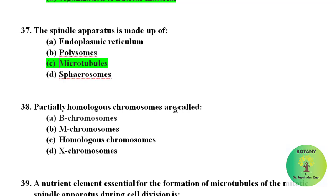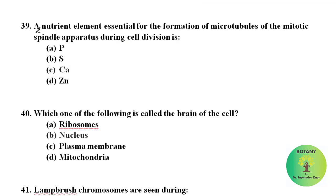Partially homologous chromosomes are called B chromosomes. B chromosomes are formed in addition to the normal karyotype. These chromosomes are not essential for the life of a species. Nutrient element essential for the formation of microtubules of the meiotic spindle apparatus during cell division is calcium. It is very important for the formation of microtubules. Which one of the following is called the brain of the cell? Brain of the cell is the nucleus.